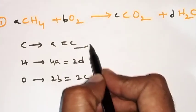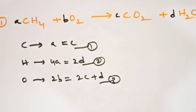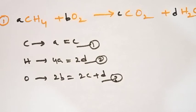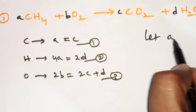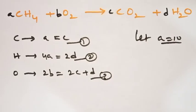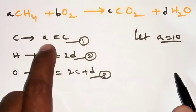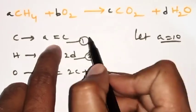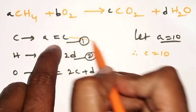So we have three equations. Our work is to find the values of a, b, c, and d. For that purpose, let a = 10. We choose 10 because it has more factors — 2, 5, and 1 — giving flexibility. If a = 10, then from equation 1 (a = c), we get c = 10.